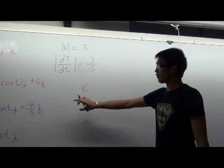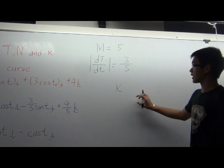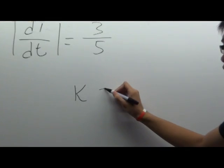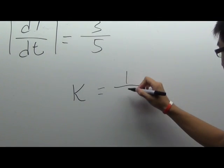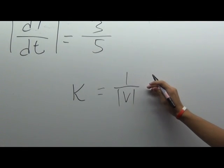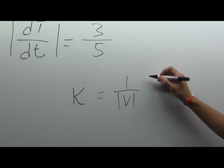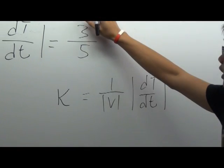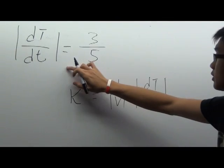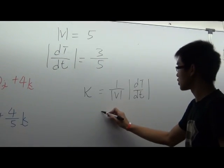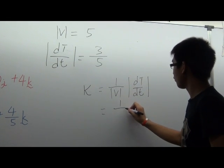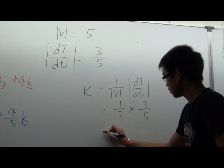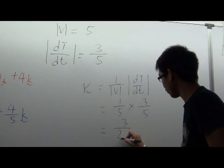Now we find kappa k. From before we know that k equals 1 over the magnitude of V times the magnitude of dT/dt. The magnitude of V is 5 and the magnitude of dT/dt is 3/5. So kappa equals 1 over 5 times 3/5, which equals 3/25.